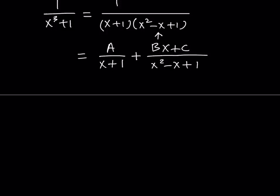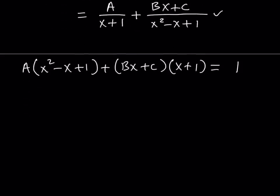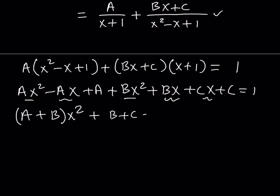Let's make a common denominator and then just forget about the denominators. So A will be multiplied by x squared minus x plus 1, and Bx plus C will be multiplied by x plus 1. This is supposed to equal 1, because that's the numerator. Now let's distribute: this gives ax squared minus ax plus a, plus bx squared plus bx plus cx plus c. Combining like terms, we get (a plus b) times x squared, then (b plus c minus a) times x, and then the constant a plus c.